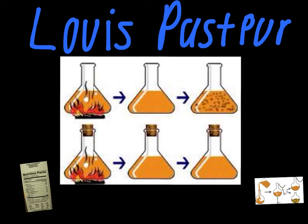Some people argued against him, saying the reason nothing started to grow in the sealed container is because he prevented air from entering. It had nothing to do with living things in the air. They argued spontaneous generation still happens — it just didn't happen there because there wasn't enough air for those living things to start to grow. So even though Spalanzani was right, he was still getting criticized.